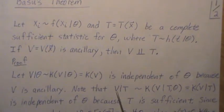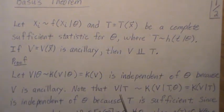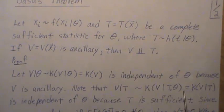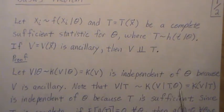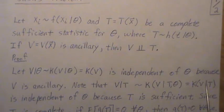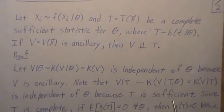So note that v given t, remember this was v given theta. v given t is distributed with some distribution k, so v given t and theta. But since t is sufficient, it's independent of theta.